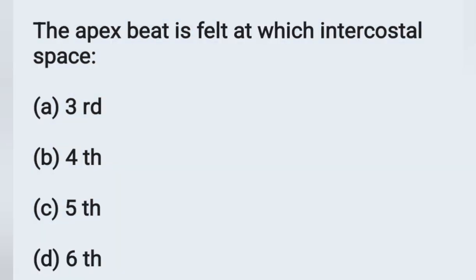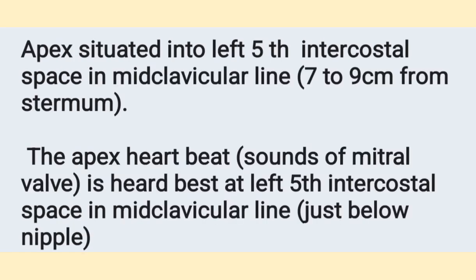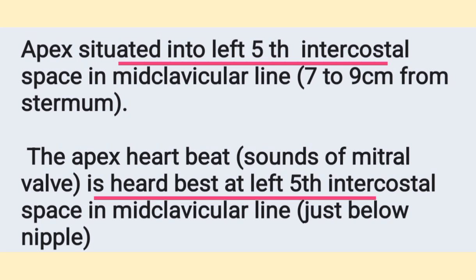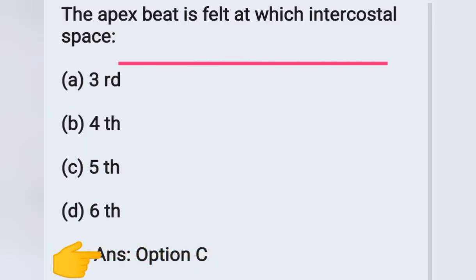Next question: the apex beat is felt at which intercostal space? Options: (a) third, (b) fourth, (c) fifth, (d) sixth. The apex of the heart is situated in the left fifth intercostal space in mid-clavicular line, that is seven to nine centimeters from the sternum. So the apex heartbeat is best heard at the left fifth intercostal space in mid-clavicular line — just below the nipple. Option C is the correct answer.